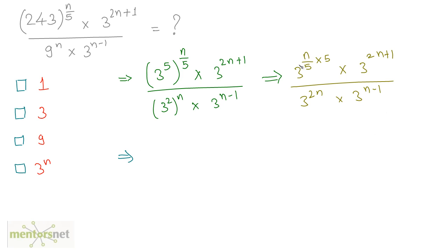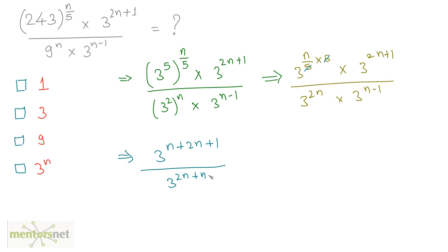In the numerator I have a raised to m times a raised to n, which is a raised to m plus n. Cancelling the 5, I have n plus 2n plus 1 in the numerator, so n plus twice of n plus 1. In the denominator I have 3 raised to 2n plus n minus 1. This gives 3 raised to 3n plus 1 divided by 3 raised to 3n minus 1.